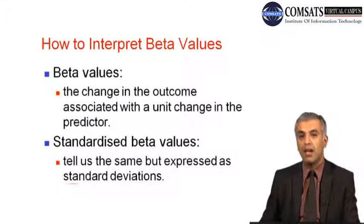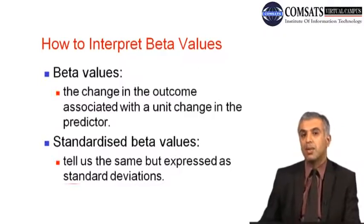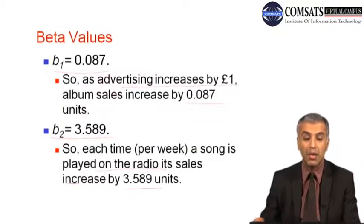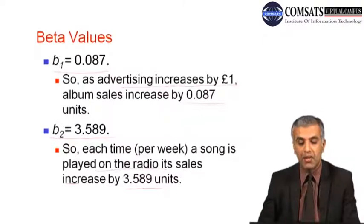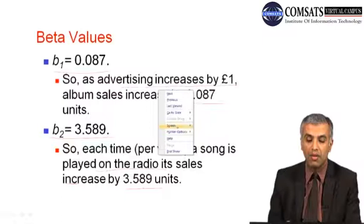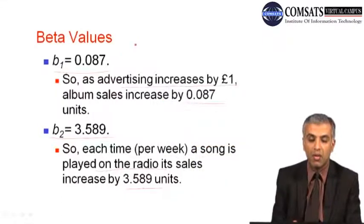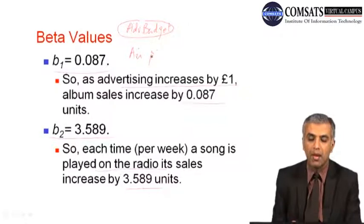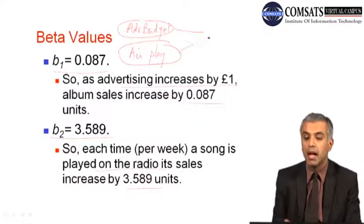The standardized beta values tell us the same thing but they are expressed in standard deviation. In the example we discussed, we were trying to find the impact of the advertising budget and airplay on album sales. Our model had advertising budget and the number of hours a specific song was played on the radio, and their impact on album sales.